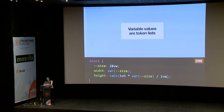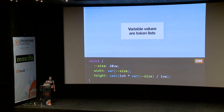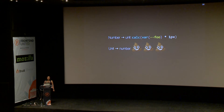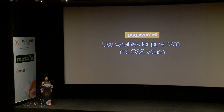The reason you cannot divide by lengths is that when calc was defined — long before variables — there was no concept of invalid at computed value time. So we were like: what happens when you're trying to divide by zero? There was nothing we could do. So if you have a number, you can convert it to a length by just multiplying with one of that unit. But if you have a unit, you cannot convert it back to a number — there's simply no CSS-based way to do it. Which brings us to the sixth takeaway: you should use variables for pure data, not CSS values. You can always convert it to the CSS value you need, but you cannot convert it back.